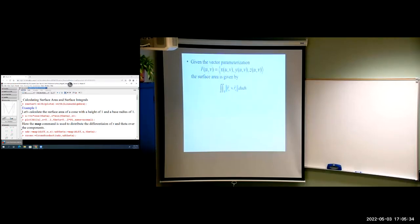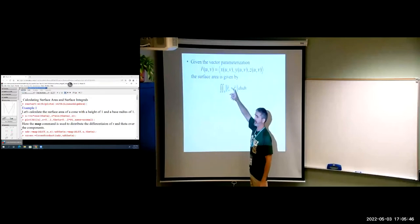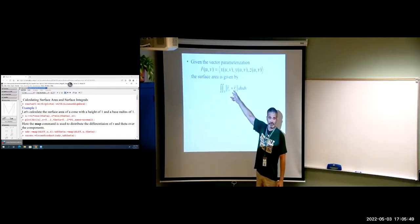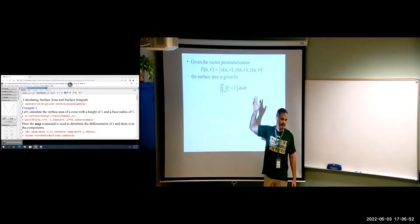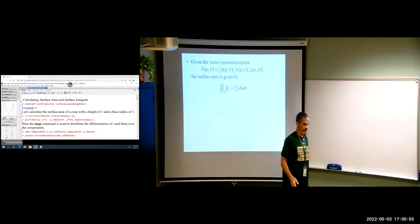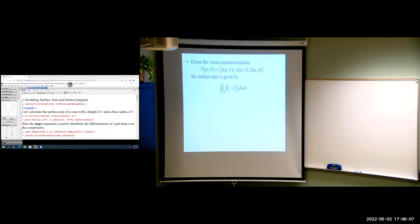The formula says to take the partials of your parameterization with respect to u and v, do the cross product of those, take the magnitude, and your limits will be the exact same limits you used on u and v to create your parameterization. If you can create the parameterization in Calc Plot 3D that makes the surface you want, you can do the surface area — it's just a matter of doing the partials, cross product, setting up, and calculating your integral, which with technology should be straightforward.